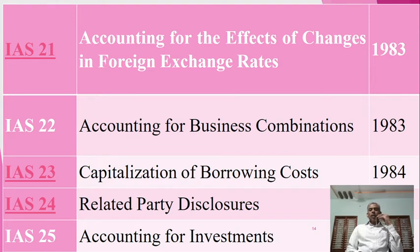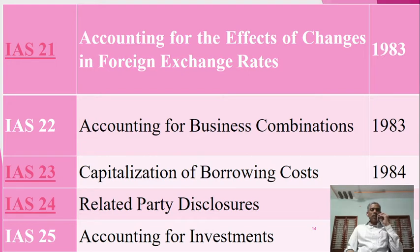IAS 22 is on accounting for business combinations — meaning the combination of business entities such as trading or partnership firms — with standards fixed. IAS 23 covers capitalization of borrowing costs, established in 1984. IAS 24 is on related party disclosures, with policies and strategies fixed, also established in 1984. IAS 25 covers accounting for investments.